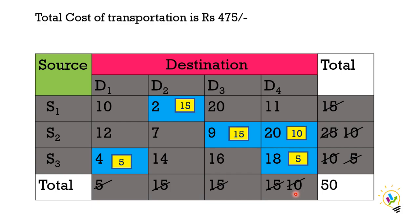So this is the total cost of transportation. Rupees 475 is the cost. And this is the minimum cost which we have calculated using least cost method. And this is called the initial basic feasible solution. 475 is the least cost using least cost method. Thank you.